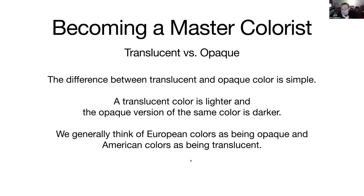This is particularly true when the color is already on the hair. If a color is too dark on the hair, lightening it often — if not always — brings up warm tones. There are ways of doing it that don't bring up warm tones, and we'll talk about that eventually.